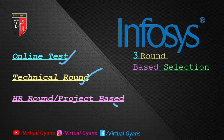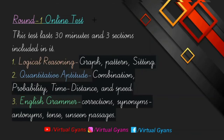The online test lasts for 30 minutes and three sections are included in it. The three sections are logical reasoning, quantitative aptitude, and English grammar. In logical reasoning, most of the questions were asked from graphs, pattern, and seating arrangement topics.